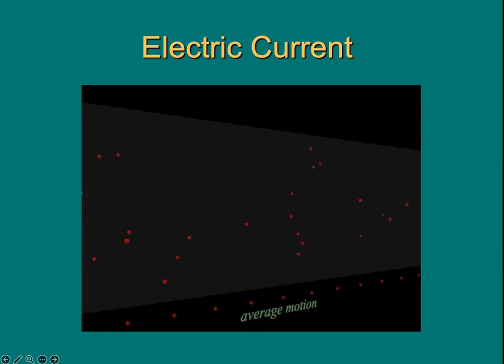Now in this simulation, they are using positive charges because we observe those charges are moved in the direction of the electric field. For electrons, on average, electrons will move in the opposite direction of the electric field.